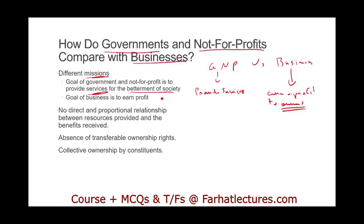The betterment of the society refers to the people that live under the jurisdiction of that government — technically, the voters. Another important distinction is that there is no direct and proportional relationship between resources provided and the benefits received in government and not-for-profit. In a business, every time they buy an asset, they do a cost-benefit analysis, maybe looking at future cash flow to make sure the investment is recovered.